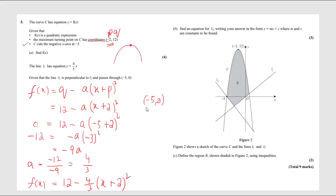The next part: the line L1 has a given equation. Given that the line L2 is perpendicular to L1 and passes through a given point, find the equation of L2, writing your answer in the form y = mx + c.